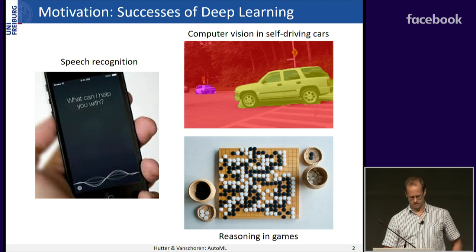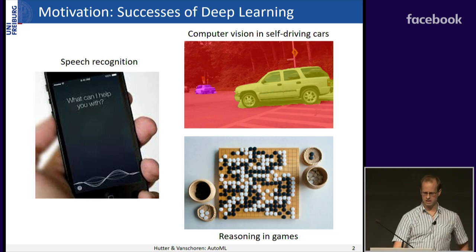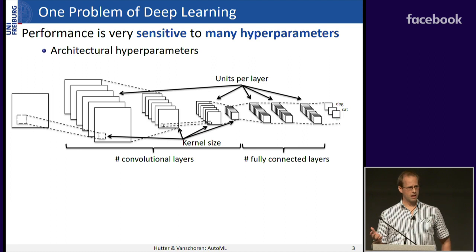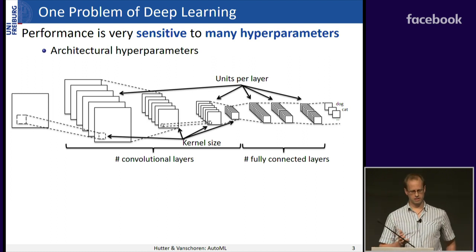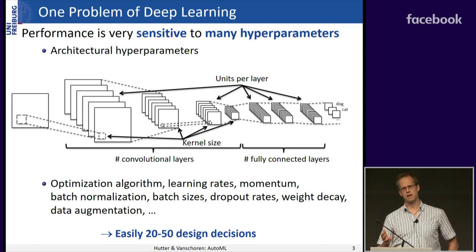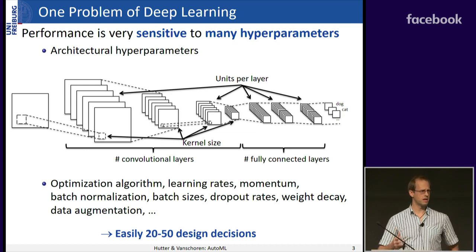All these advances are based on expert knowledge of brilliant people who have gathered a lot of expertise in deep learning and know how to set all the hyperparameters. If you want to apply deep learning to a new problem domain, the challenge is that deep learning is very sensitive to many hyperparameters, such as architectural choices, optimization pipeline choices, and regularization. You easily get between 20 to 50 design decisions you need to make in order to train your network.